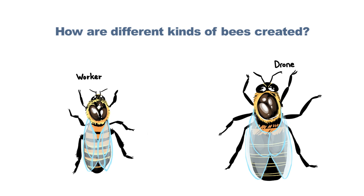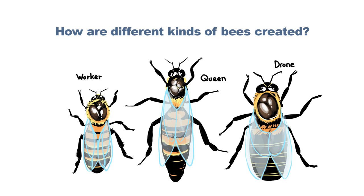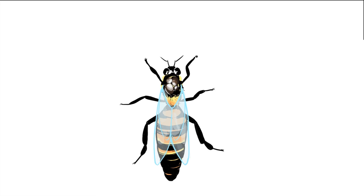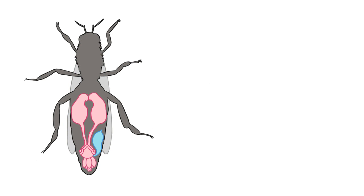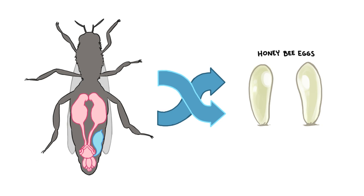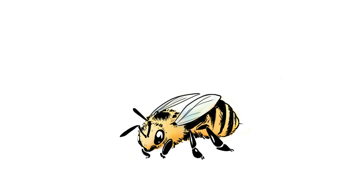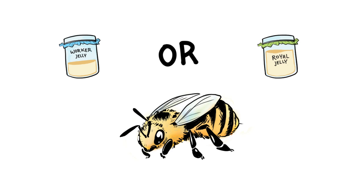How are different kinds of bees created? Queen bees have a specialized reproductive system which lets them make some choices in the sort of eggs that are laid — diploid or haploid. But some final choices are also made by the worker bees, who feed the emerging larvae either worker jelly or queen jelly.